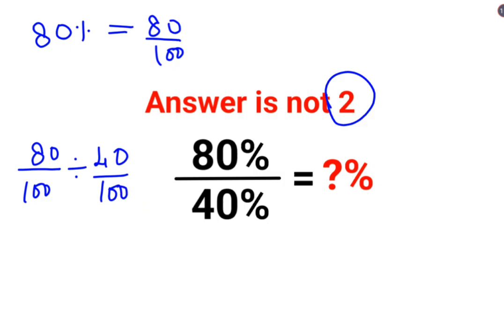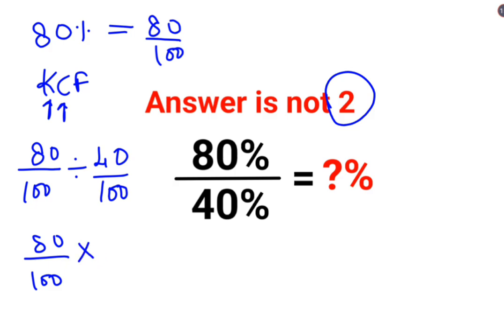Now whenever you have division, you need to follow the rule of KCF, where K stands for keeping the first number as it is, C stands for changing the division sign to multiplication, and F stands for flipping or taking the reciprocal of 40 upon 100, which is 100 upon 40.